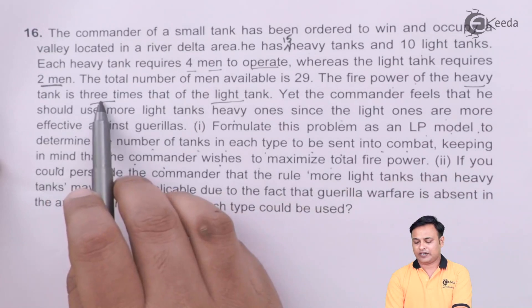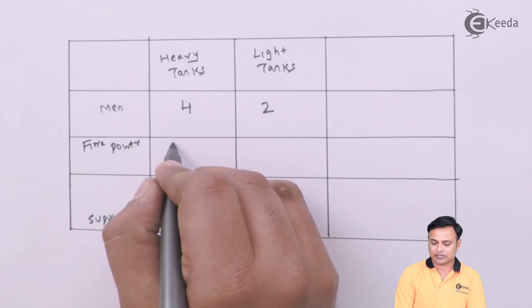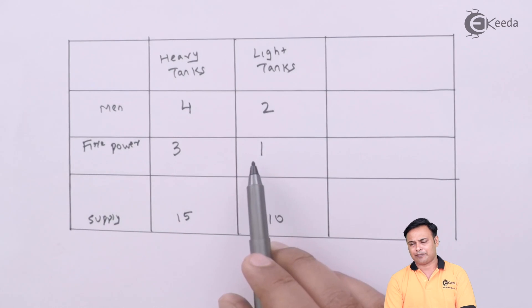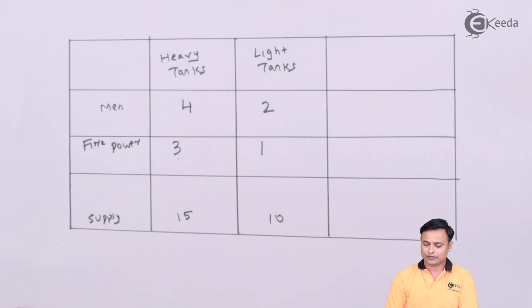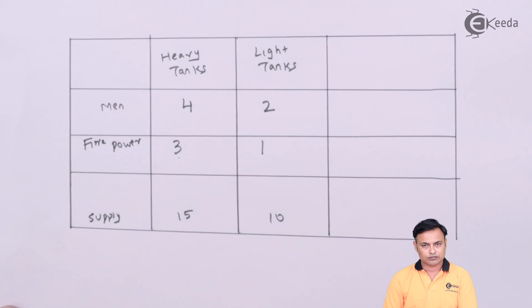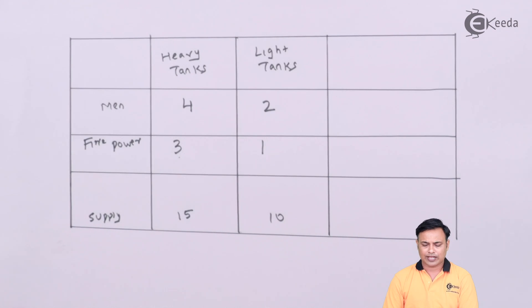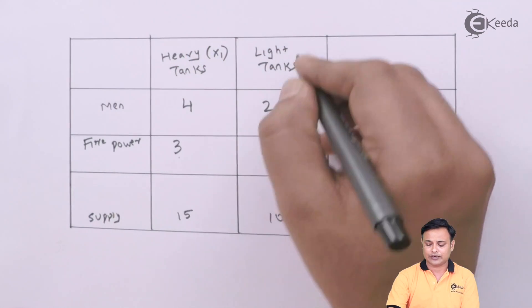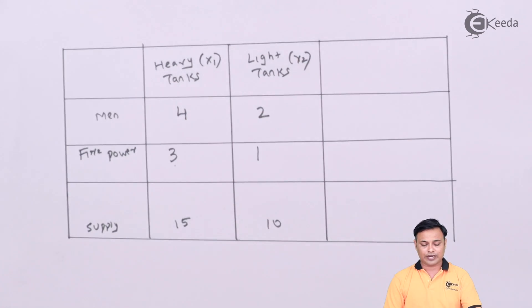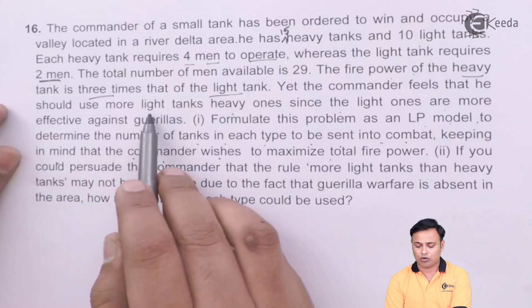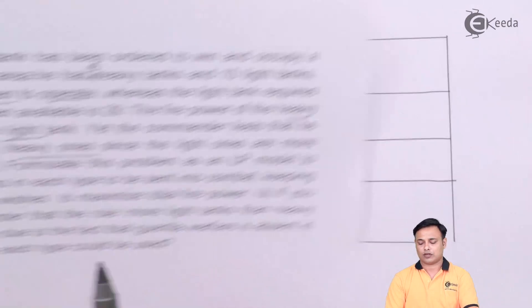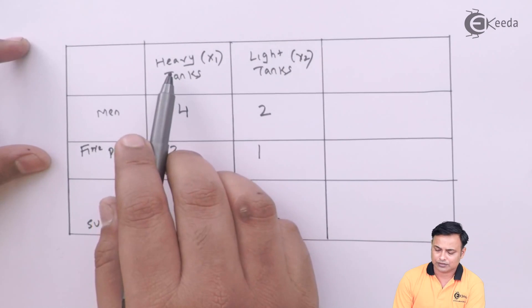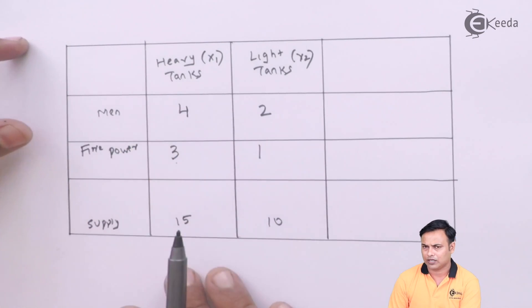For fire power, the heavy tank has three times the fire power compared to the light tank. We need to maximize the total fire power. Our decision variables are: how many heavy tanks and how many light tanks to use. There is also the condition that the commander wants more light tanks used than heavy tanks.